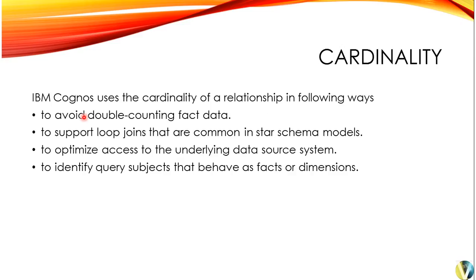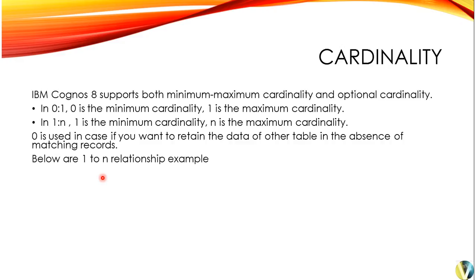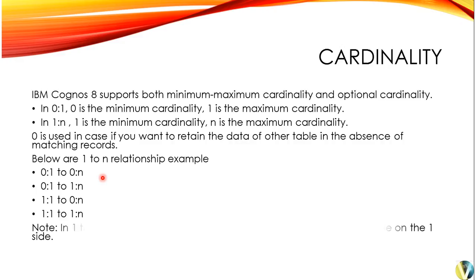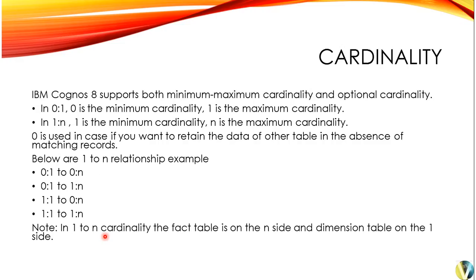To identify which query subject acts as a fact or dimension: if you are defining a 1 to n relationship, then in that cardinality the fact table is on the n side and the dimension table is on the one side. I will explain this further in my next video. In the previous video I explained the data layer and how to create a relationship between two query subjects; in this video I am explaining cardinality theory; and in my next video I will show the actual cardinality between two query subjects.